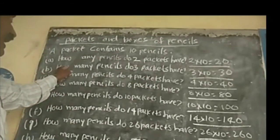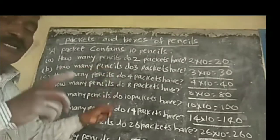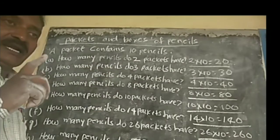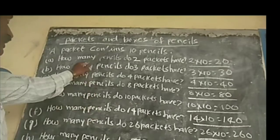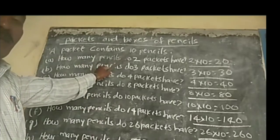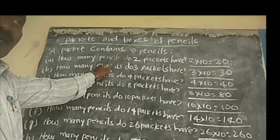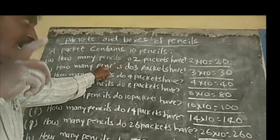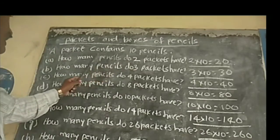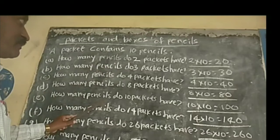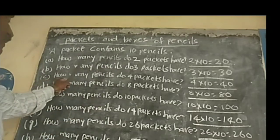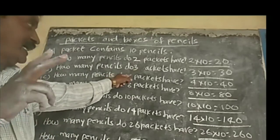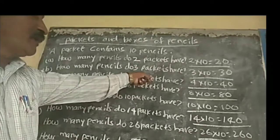A packet contains 10 pencils. How many pencils does a packet contain? 10 pencils. This is the main point — remember it. Now, questions on multiplication: how many pencils do 2 packets have? So multiply by 2.